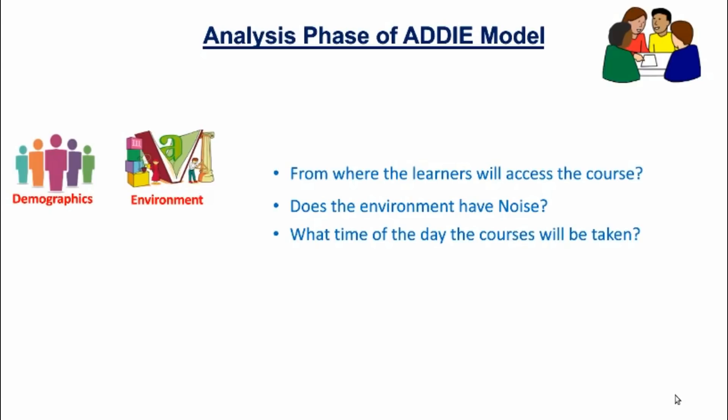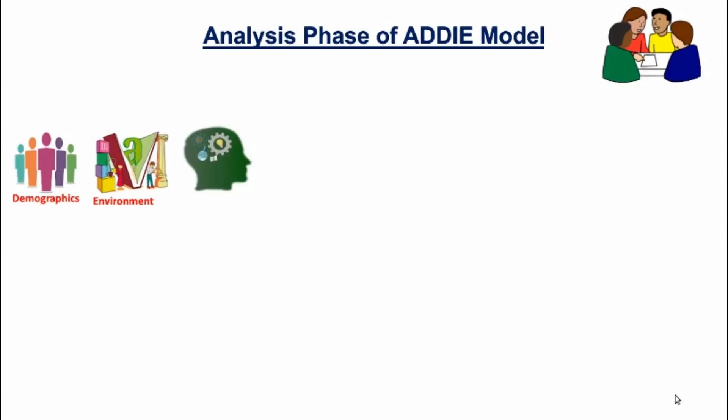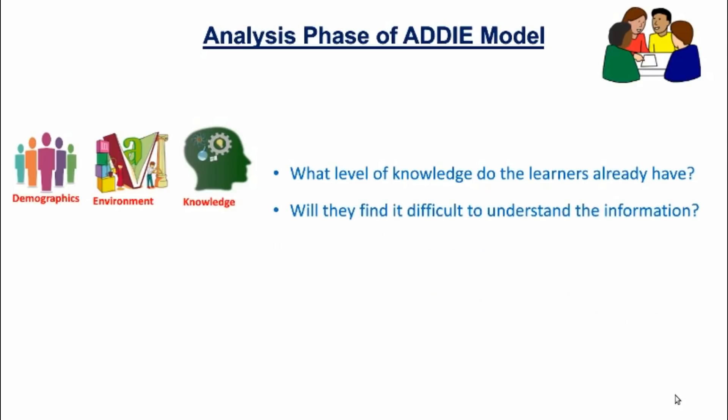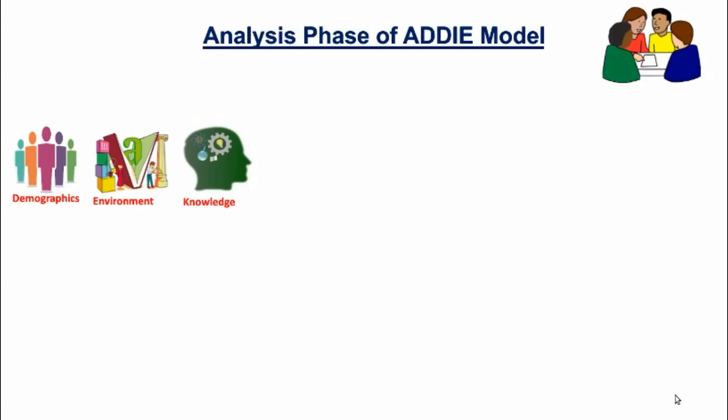At the time of finding answers to these questions, we will also have to know the knowledge level of the learners. For that we will need to ask questions like what level of knowledge do the learners already have, will they find it difficult to understand the information, will they find it difficult to apply these informations in the practical scenario. Then we have to know about the motivation level of the learners.